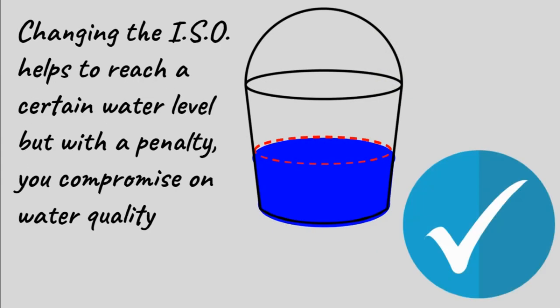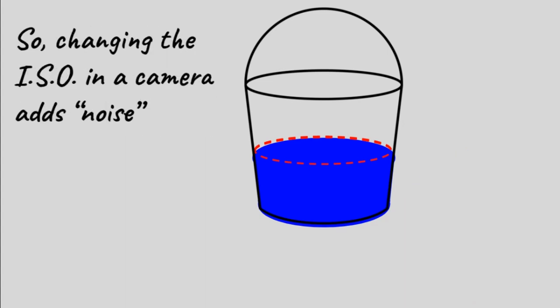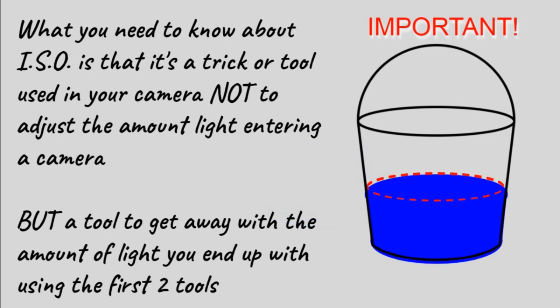Changing the ISO helps to reach a certain level of exposure but with a penalty. You compromise on image quality in a photograph. So changing the ISO adds noise into the photograph. The most important thing to understand about ISO is that it's a trick or a tool that's used not to adjust the amount of light entering your camera but a tool to get away with whatever amount of light you have available using your shutter speed and aperture.